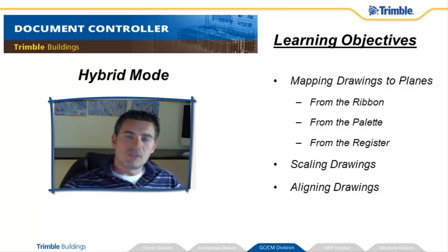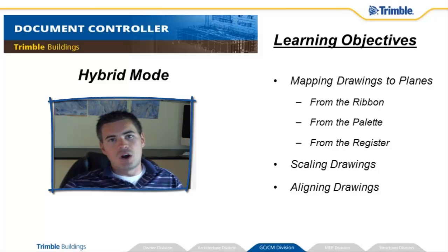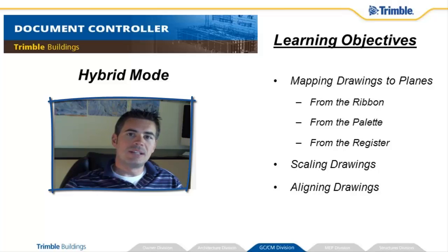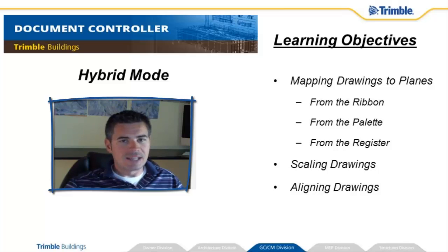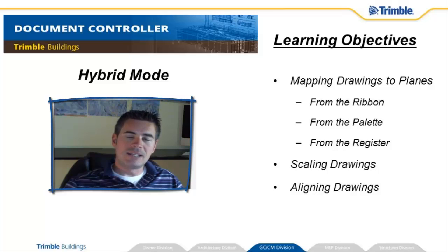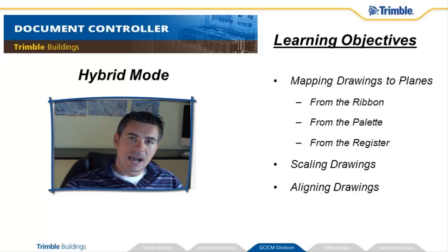In order to do that, the first thing we're going to learn today is how to map drawings from the document register onto the reference planes that we created in the last video. Once we have the drawings on the reference planes, we're going to scale them up from their small printed size to their real world size to match the BIM model. Last but not least, we're going to go through the aligning process where we match up the 2D content onto the 3D model to get that mixed hybrid environment. Let's get into it.